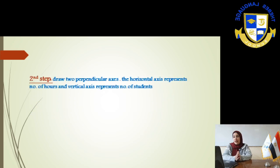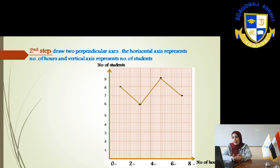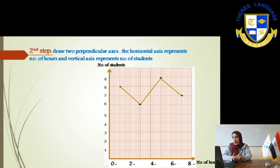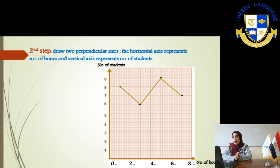Now, draw the axis as we learned before. Two perpendicular axes. The horizontal axis represents the number of hours, which is x-axis. And the vertical axis, which is y-axis, represents the number of students.